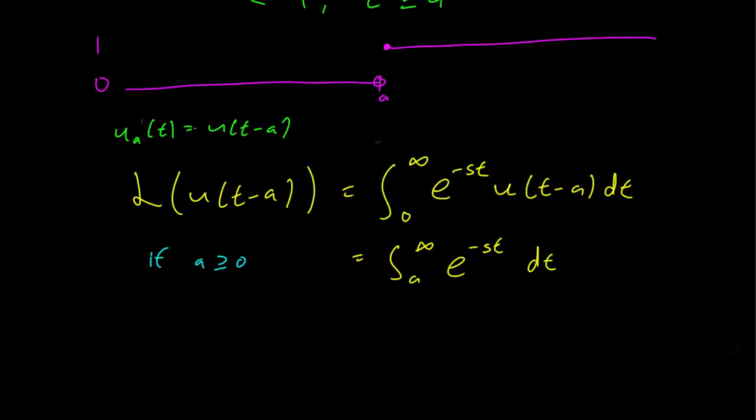So this is a really straightforward integral to do. We're just going to do e^(-st) divided by -s going from t equals a to infinity.